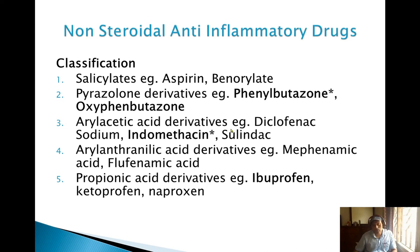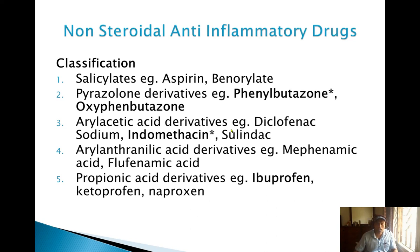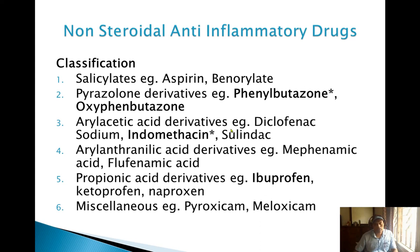Fourth: aryl anthranilic acid derivatives — examples are mefenamic acid and flufenamic acid. Fifth: propionic acid derivatives — examples are ibuprofen, ketoprofen, and naproxen. Ibuprofen is the most widely used painkiller for pain and inflammation; naproxen is the newer one and preferable. Notably, ibuprofen should not be used in COVID-19 cases, as it has been observed to increase severity. Sixth: miscellaneous drugs — examples are piroxicam and meloxicam.